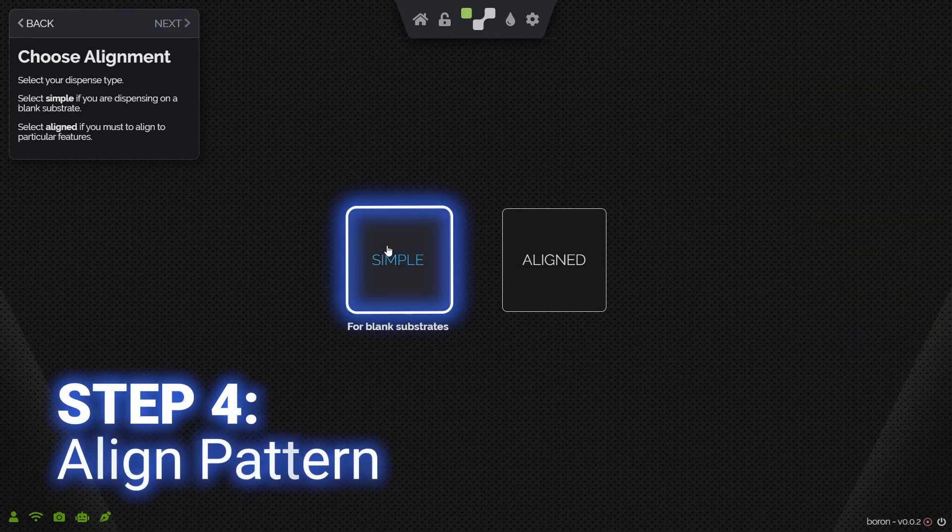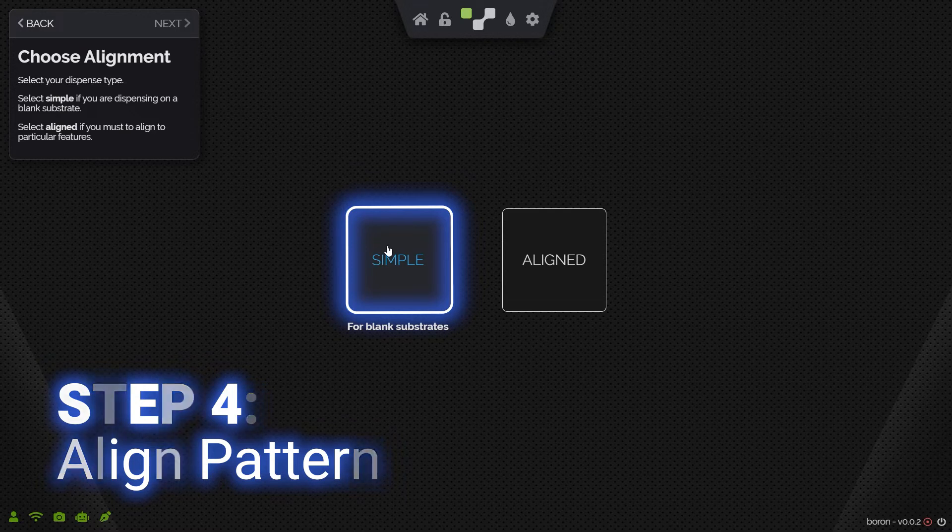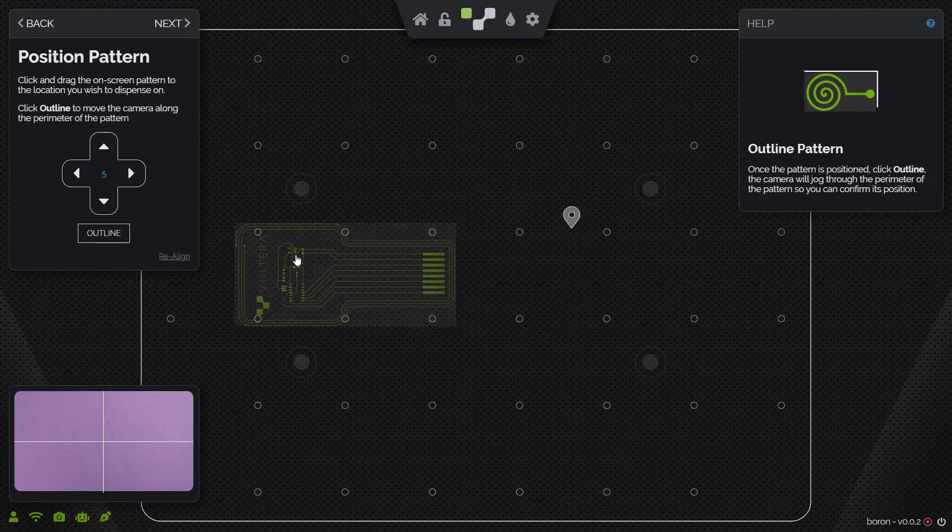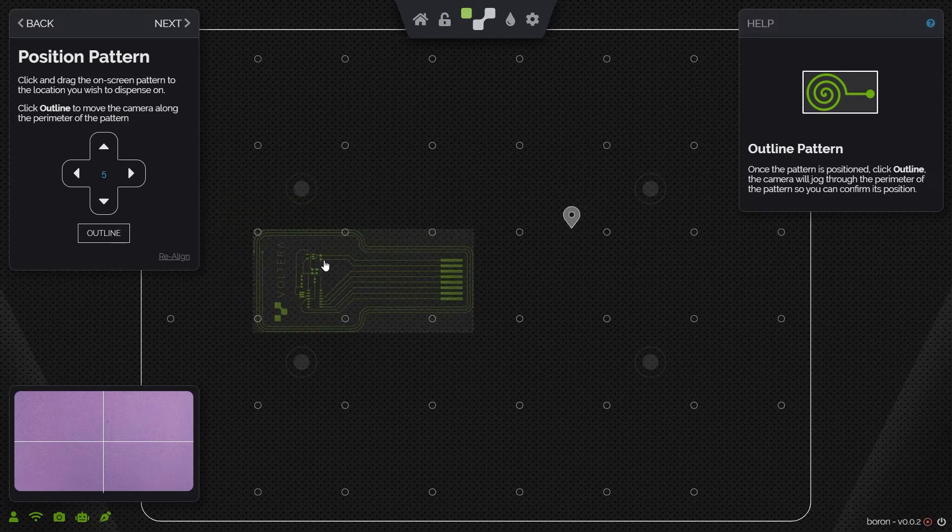For this workflow, we're just going to choose a simple alignment, because we don't have any existing features we need to align our print to. I can click and drag the pattern to position it exactly where I want, then hit outline.